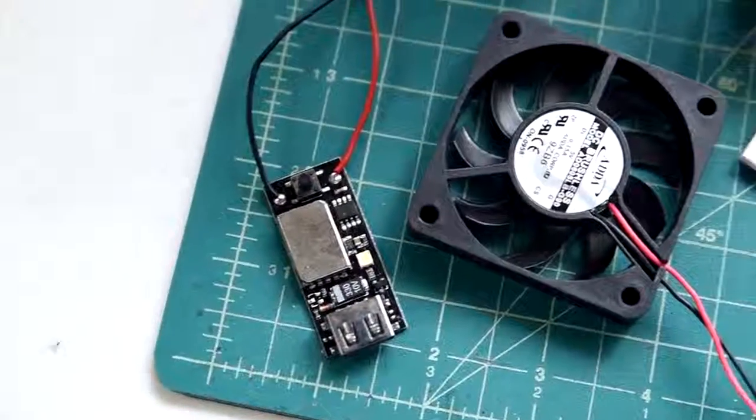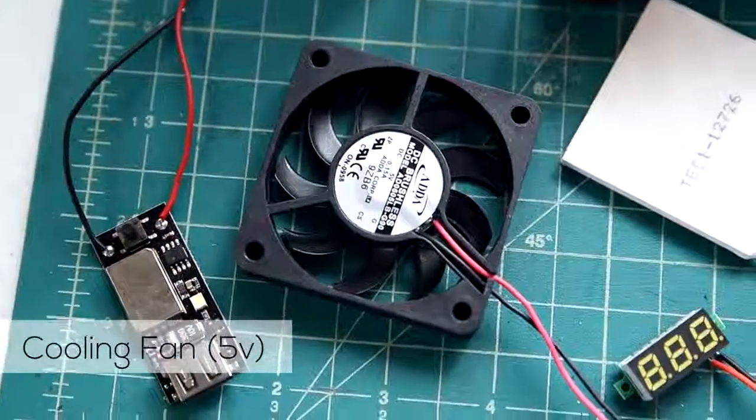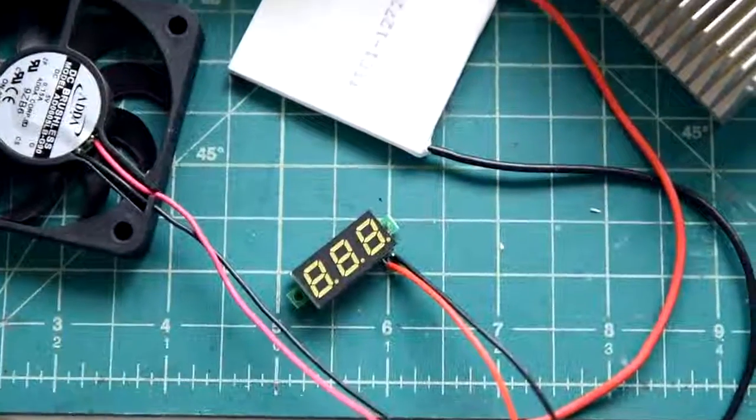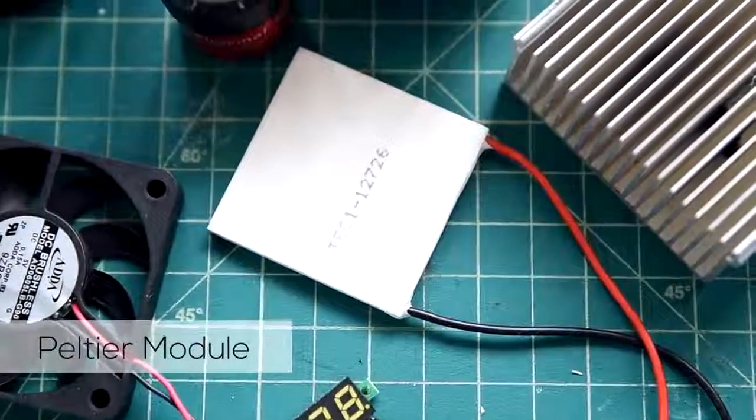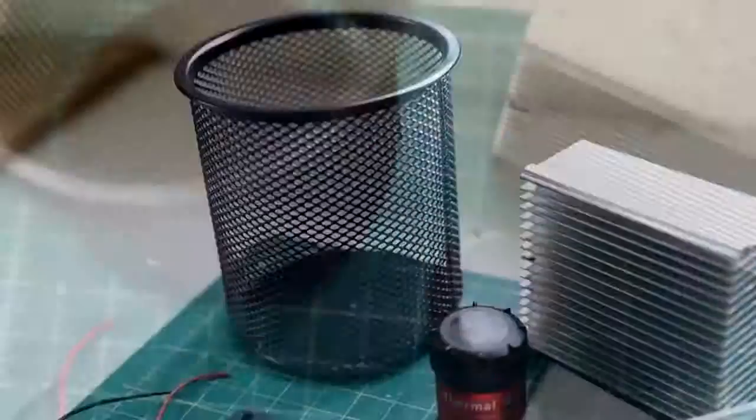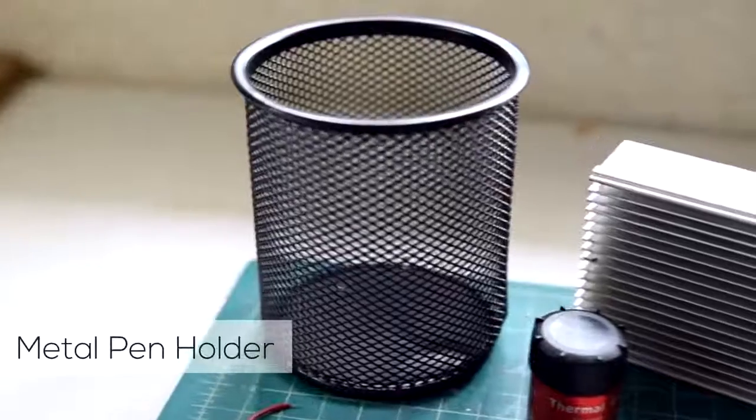A USB charging module, a cooling fan rated at 5 volts, an LCD voltmeter (this thing's optional), a peltier, also known as a thermoelectric unit, and some heat sinks that I've recycled from an old PC unit. And last but not least, a metal pen holder.